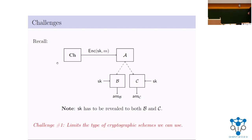Why is it so difficult to achieve Unclonable Indistinguishability? The first challenge is that the cryptographic primitives we can use are very limited. In the security game, Bob and Charlie receive the secret key — all the secret information in the system. But classical cryptographic schemes rely crucially on some secret information being hidden from the adversary. So those schemes can no longer be useful in building Unclonable Indistinguishability encryption.